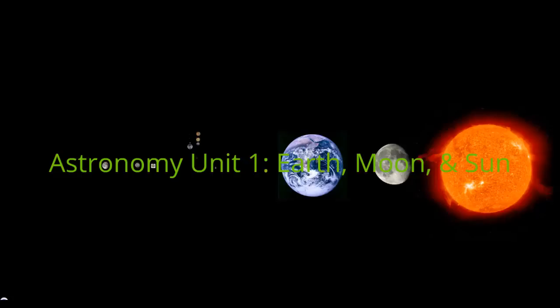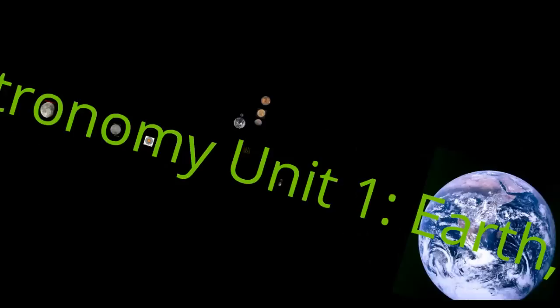How did they form? How is it different on the far side? What causes the phases and things like that? How did it form? In this vodcast, all we're going to be looking at though is how the moon is unique.